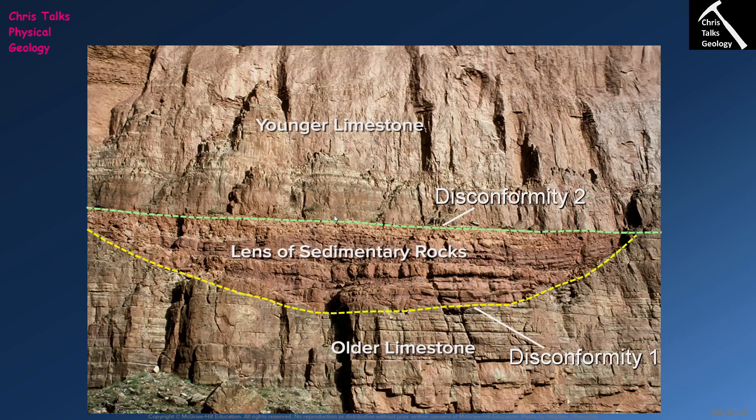Unconformities simply represent periods of lost rock from our stratigraphic record, and therefore to geologists this represents lost time. Unconformities come in three distinct types: angular unconformity, non-conformity, and disconformity. Thank you for watching everybody, and have a good day.